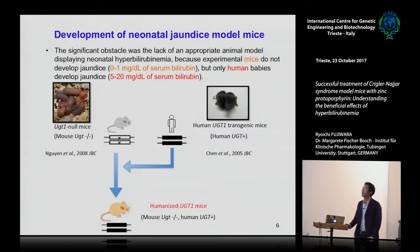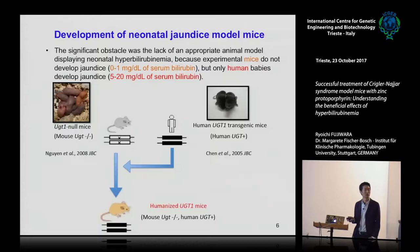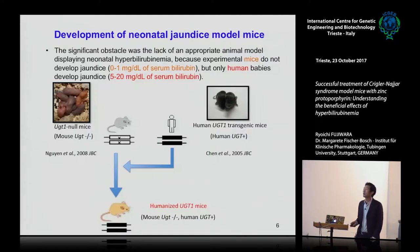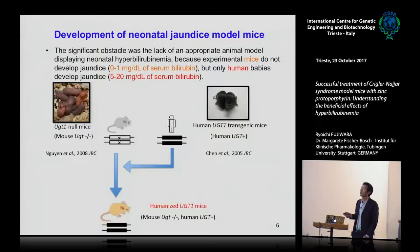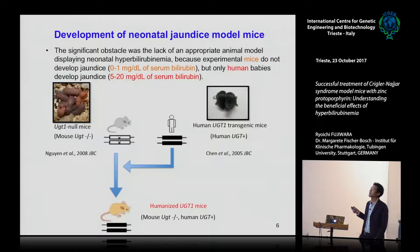Interestingly, neonatal jaundice is very specific to humans. It doesn't happen in mice, rats, or other animals. That's why we don't know much about jaundice — we don't know the basics of how we develop jaundice, or why we have this jaundice during the neonatal period. The main reason is that we don't have good animal models that display hyperbilirubinemia like human babies.